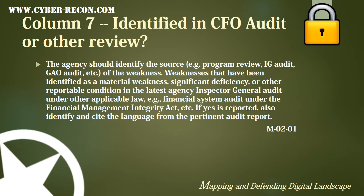Column 7 is used to identify how the weakness was discovered. According to GAO, the agency should identify the source of the weakness — weaknesses identified as a material weakness, a significant deficiency, or other reportable condition in the latest agency inspector general audit under applicable law, including financial systems audits under the Financial Management Integrity Act, should be noted. If yes is reported, also identify and cite the language from the pertinent audit report. Basically, this column will identify where the weakness was identified, which could also be a security assessment as part of the authorization process.